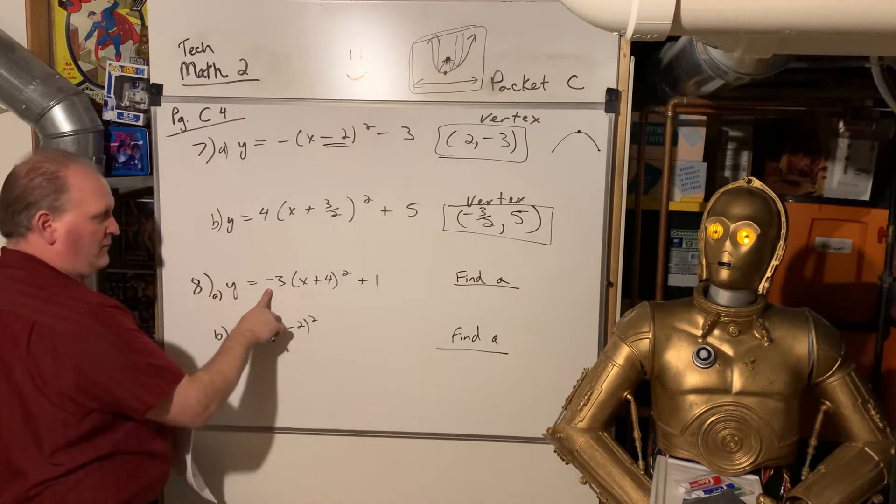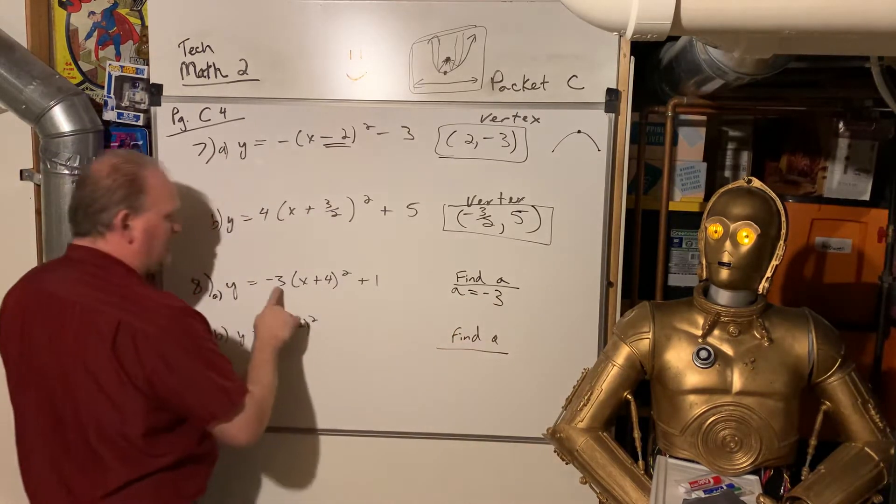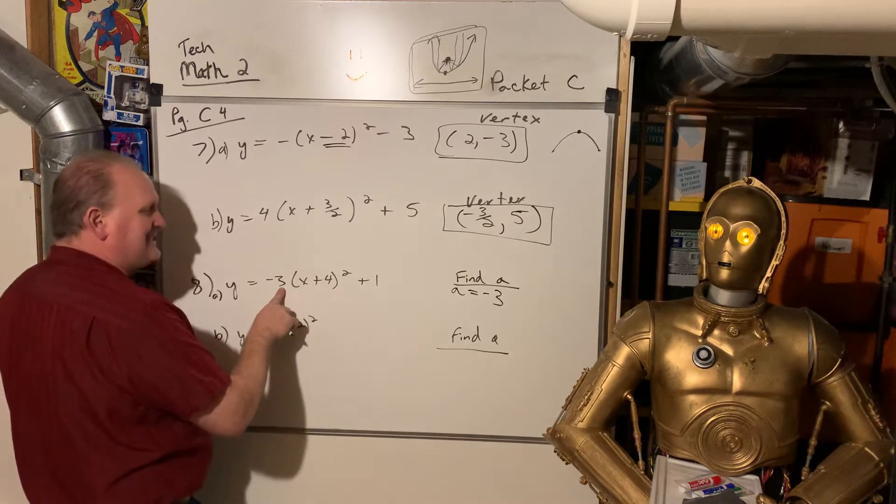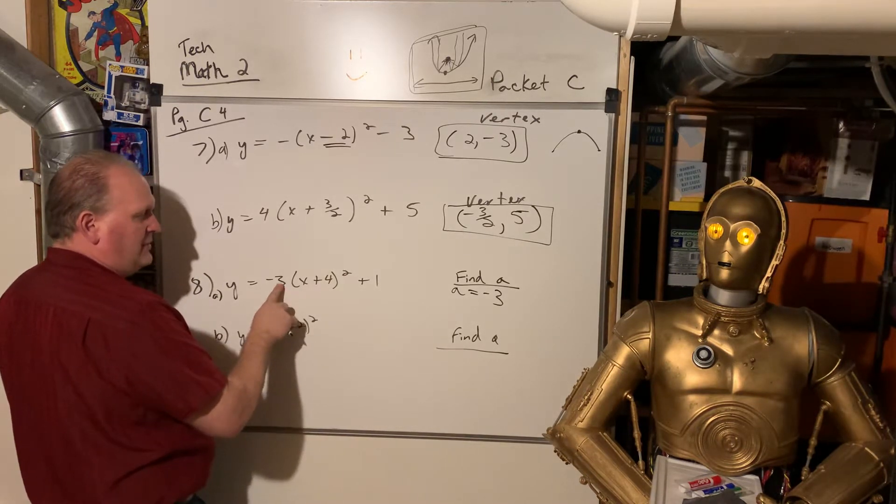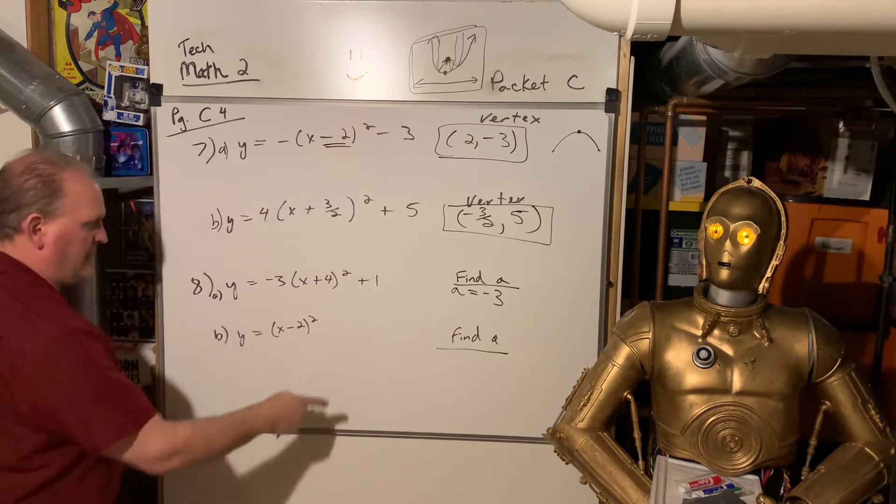This one, what's A? A is just equal to negative 3. But because it's negative, this one opens down and it's skinnier than normal, not wider than normal. The vertex is at negative 4, positive 1.